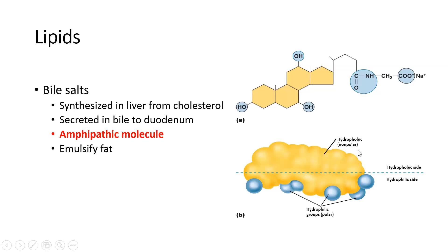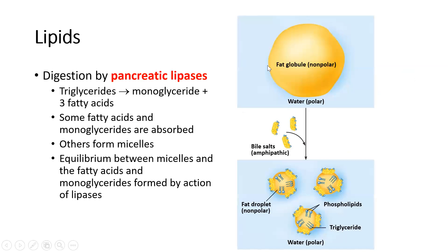The bile salts get into these large fat droplets. Here's a large fat globule — the bile salts have this dual polarity where they can get into the middle of the fat droplet and break it into smaller portions. Once it's broken down, the pancreatic lipases can get to it and break down triglycerides into monoglycerides and fatty acids. The fatty acids and monoglycerides can then be absorbed. Micelles can also be created — these amphipathic molecules help distribute fats more evenly and move them around the body.